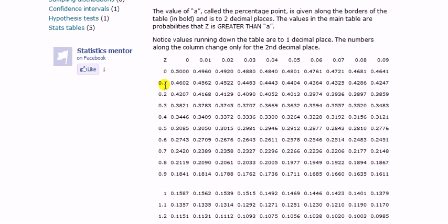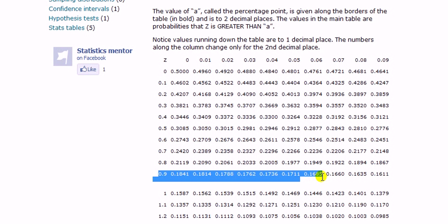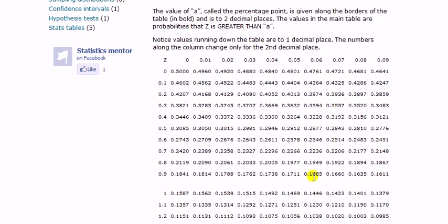A half, 0.5, here 0.5, and the second decimal place should be 0, so we have 0.3085. Also we want 0.96, so 0.9, let's go down here, that's 0.9. Slide along until we get 0.06 to get the second decimal place. Here, stop. So that's 0.1685. So the answer is 0.14.